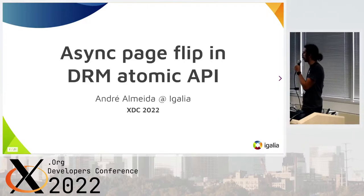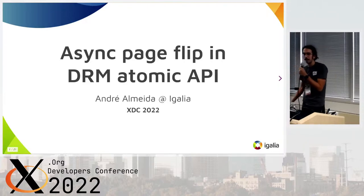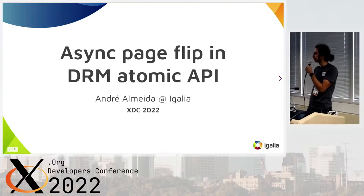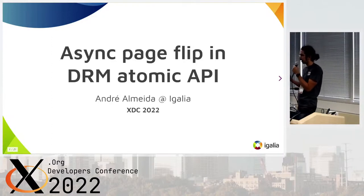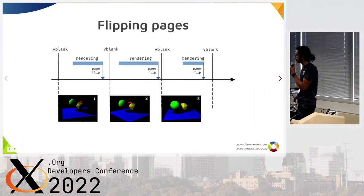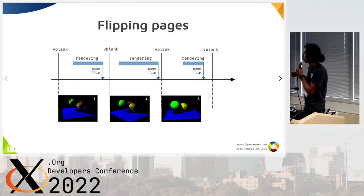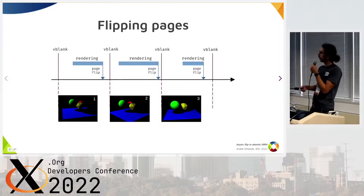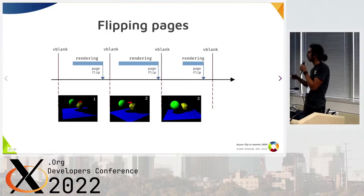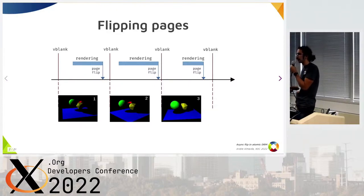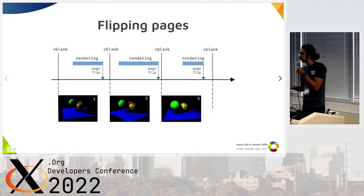Today I want to talk about something very simple: how to flip your frames — your pages — synchronously on the DRM atomic API. So you probably know this, but basically a recap. Between the V-blanks, you render your scene and then you ask for a page flip. And then when V-blank comes in, this new page is presented on the display.